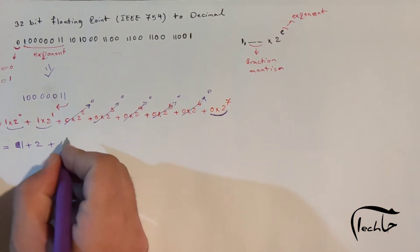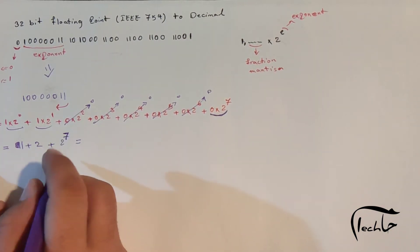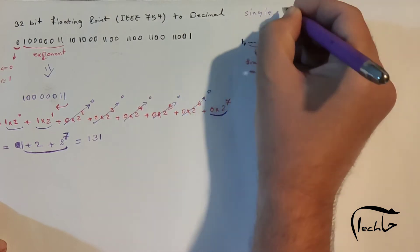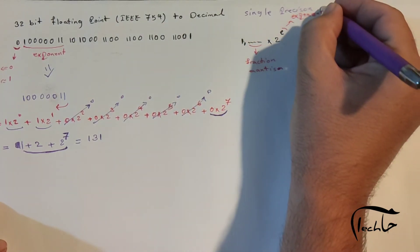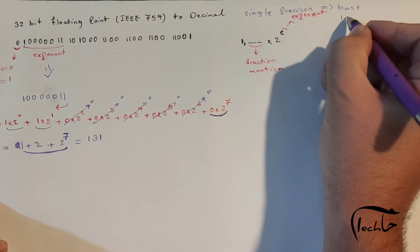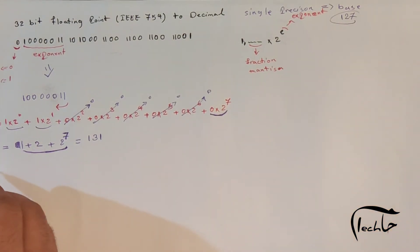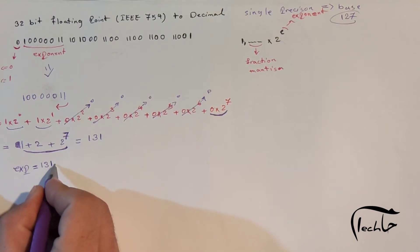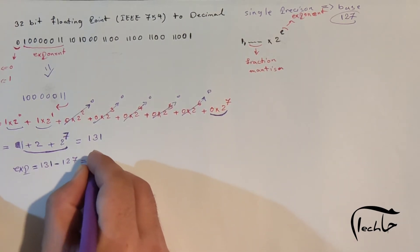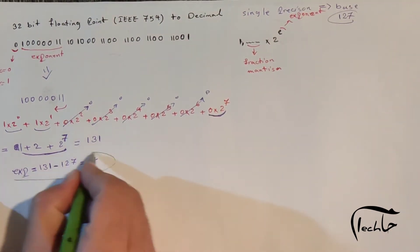Okay, this equals 1 plus 2 plus 2 power 7. I can use a calculator to calculate this, which equals 131. In the single precision, the base exponent value is 127. The actual exponent value equals 131 minus 127, which equals 4.